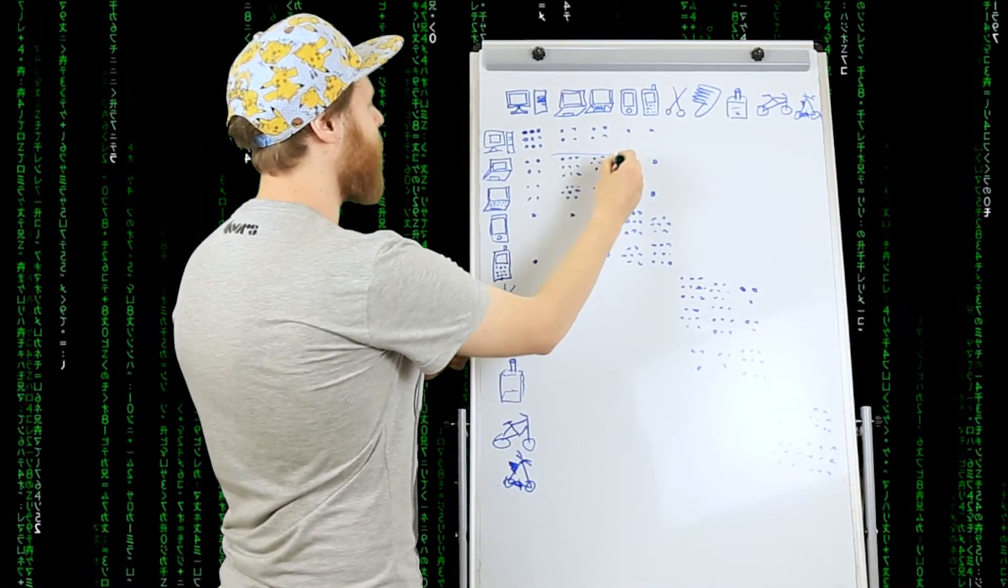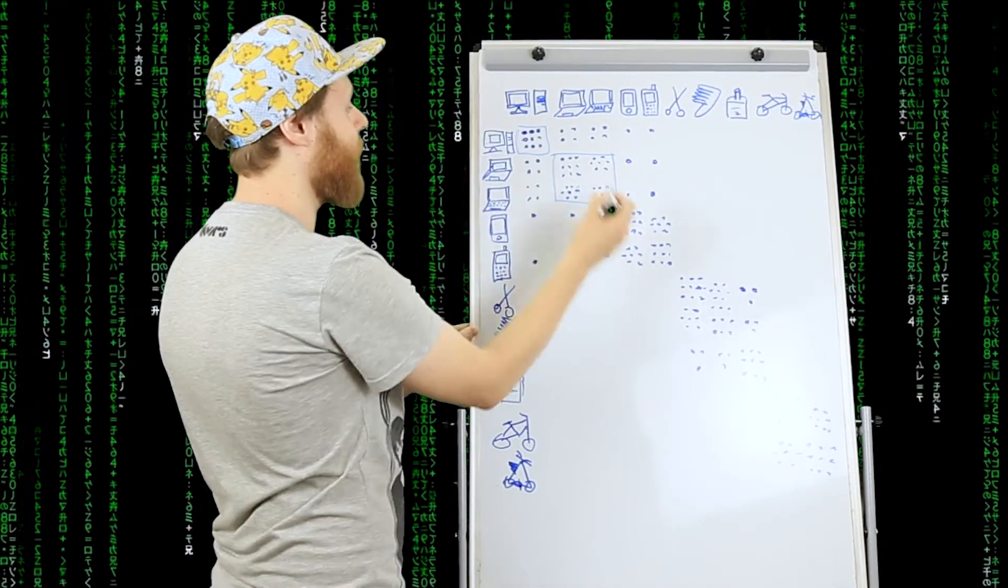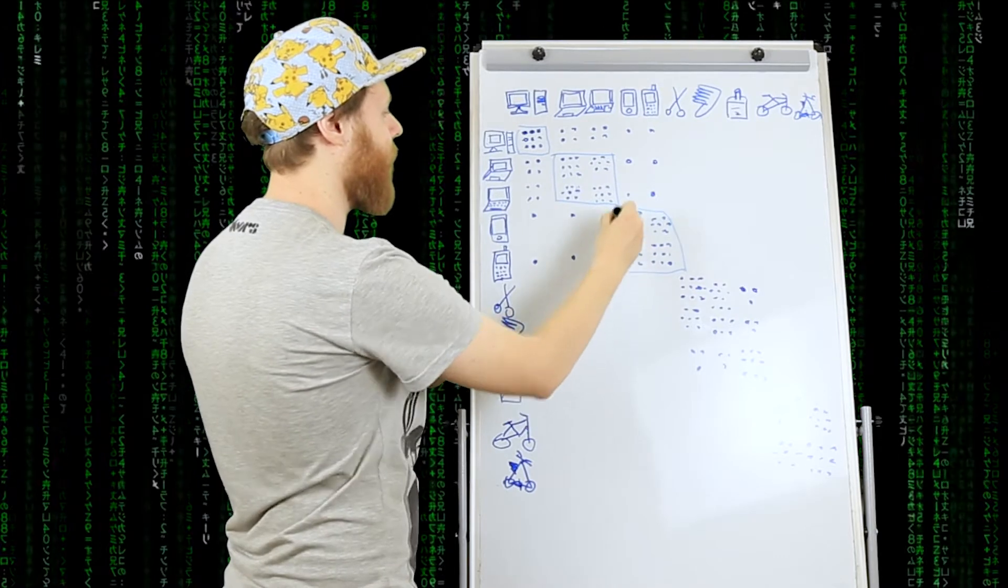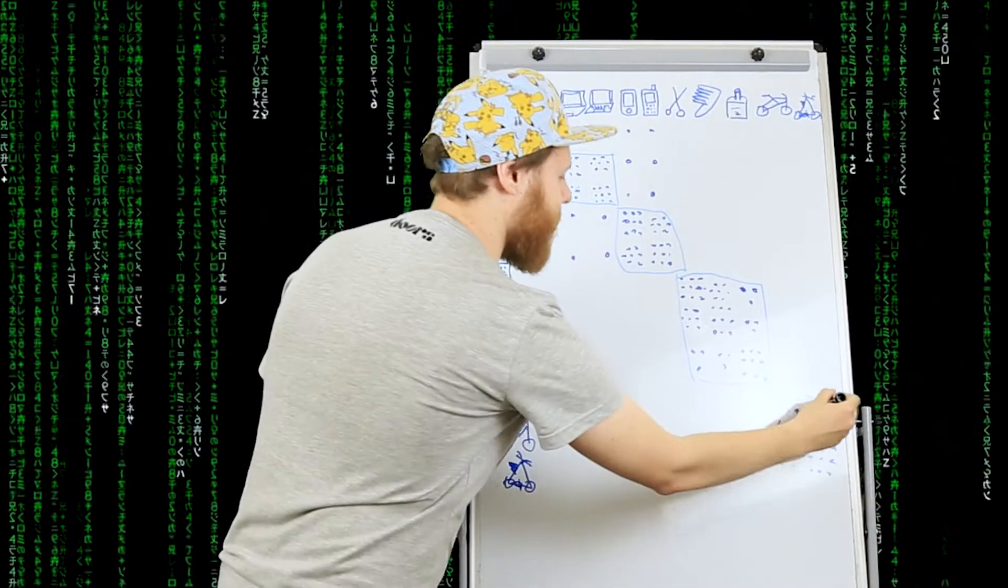Ну, вот, например, класс ноутбуков, компьютеров, телефонов, парикмахерского оборудования и, например, велосипедов.